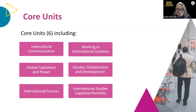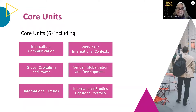When you study any Bachelor of International Studies degree, you gain an understanding of globalisation and development, global power and capitalism, and build intercultural communication skills through core units. In first year you study intercultural communication and working in international contexts. In second year, global capitalism and power, and gender, globalisation and development. These give you grounding in international relations and understanding of global financial crises, poverty, corporate power, climate change and unaccountable global governance. In your final year you'll study the Capstone Portfolio Unit and International Futures.